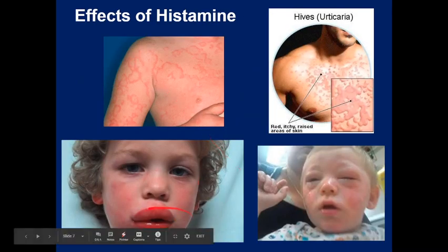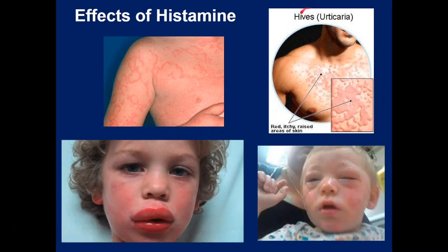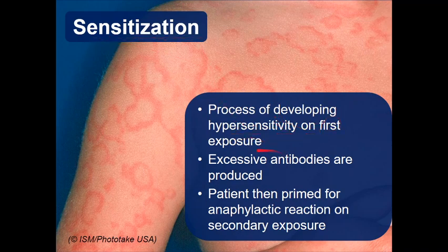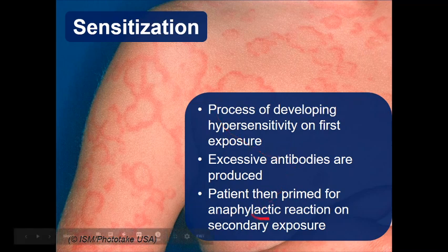Histamine can cause angioedema — those thick lips — and periorbital edema. Urticaria or hives appear as a raised, irregular, patchy distribution with surrounding erythema. The process develops over time: the first time you're exposed to an allergen, you don't mount a full response — you just develop some antibodies, becoming sensitized. On subsequent exposures, those antibodies are already present and trigger the release of mediators like histamine, which can cause an anaphylactic reaction on secondary exposure.